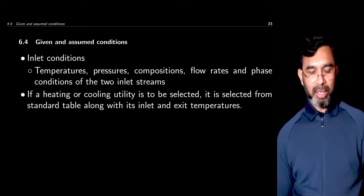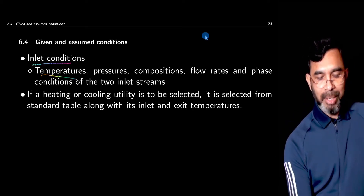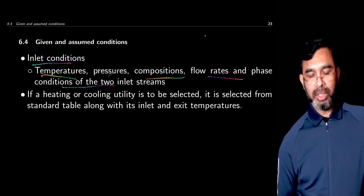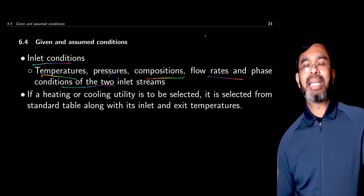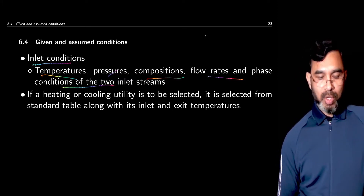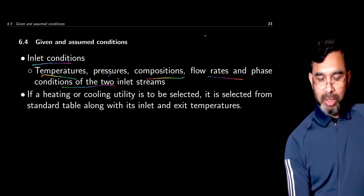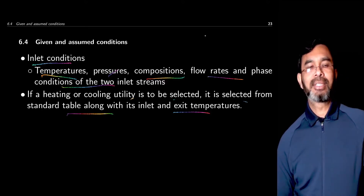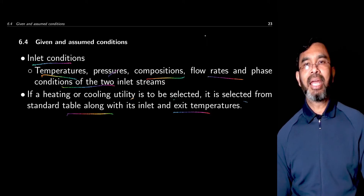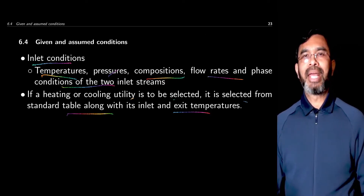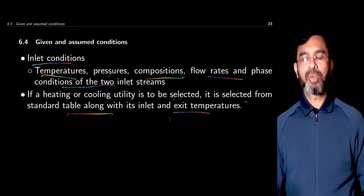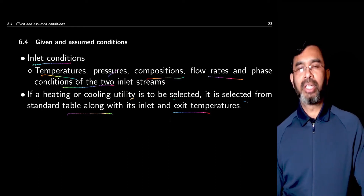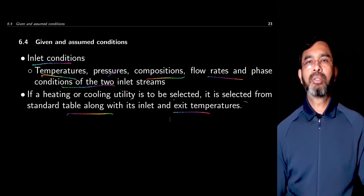Typically there are some given conditions. Inlet conditions are given — we know the temperatures, pressure, compositions, flow rates, and the phase condition of the two inlet streams. That defines the delta T as well as the heat duty. If a heating or cooling utility is to be selected, it is selected from a standard table along with inlet and exit temperatures. For example, if you are using ambient air or water from natural sources, that inlet temperature is defined, and the exit temperature may be restricted by environmental regulations.